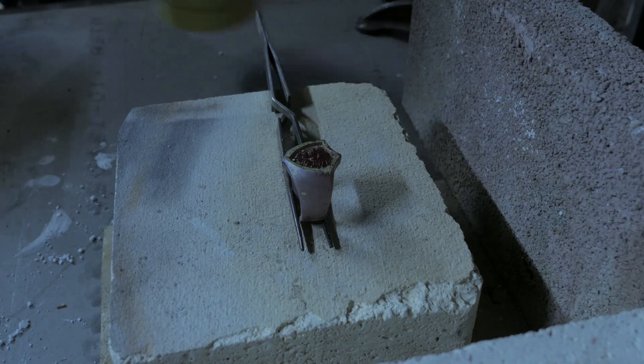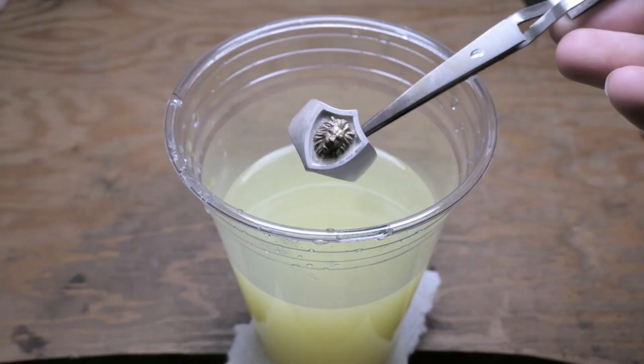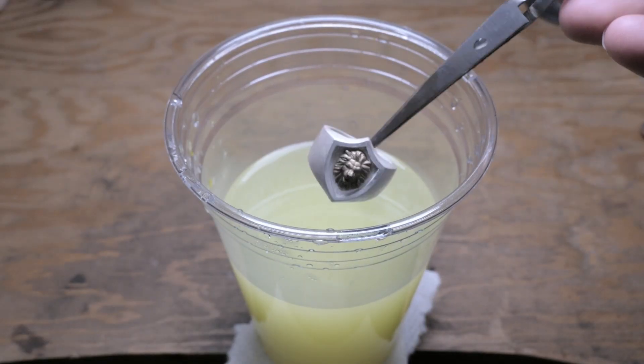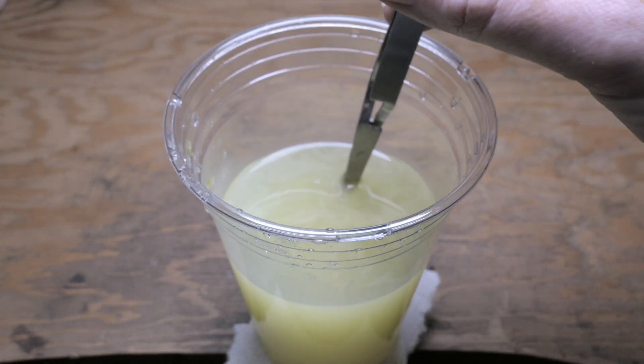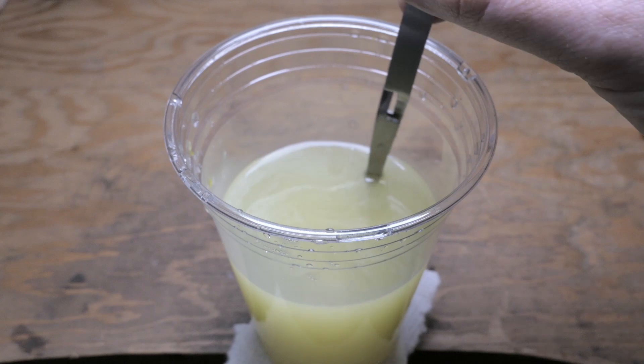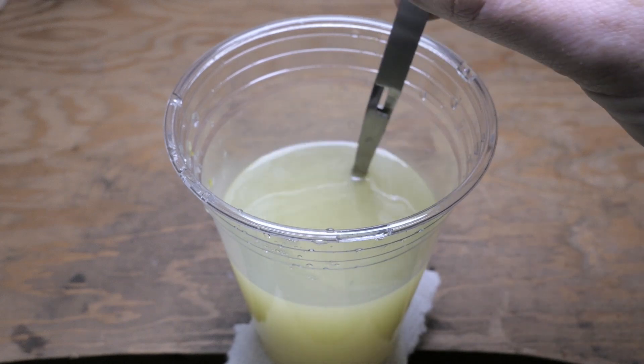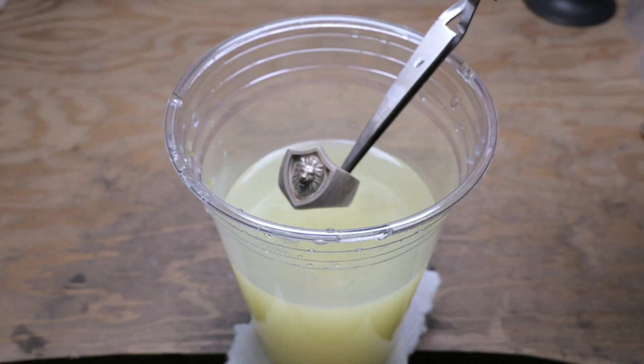So after soldering, the ring was cleaned up a bit with some pickling solution and then dipped in some diluted liver of sulfur to darken the finish of the ring. And hopefully this will help to make those details pop just a bit more.